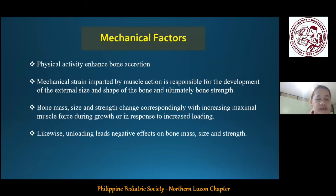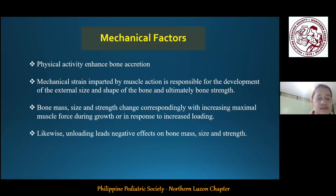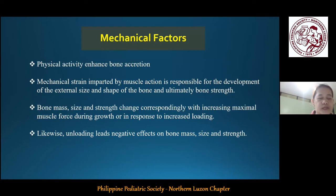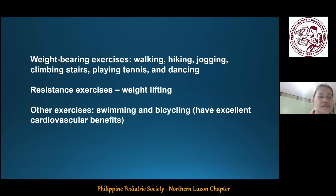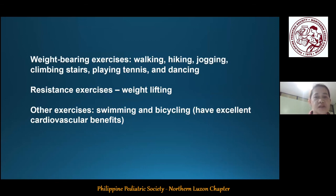Physical activity is also one of the modifiable factors that can enhance bone accretion. Mechanical strain imparted by muscle action is responsible for the development of the external size and shape of bone and ultimately bone strength. The intrinsic relationship between muscle and bone has been described by the mechanostat theory, which holds that bone mass, size, and strength change predictably and correspondingly with increasing maximal muscle force during growth or in response to increased load. Weight-bearing and resistance exercises are the best for the bones — they include walking, hiking, jogging, climbing stairs, playing tennis, and dancing. Resistance exercises such as lifting weights can also strengthen bones.